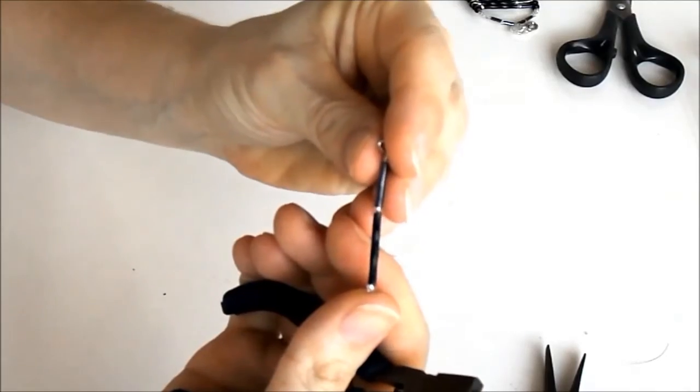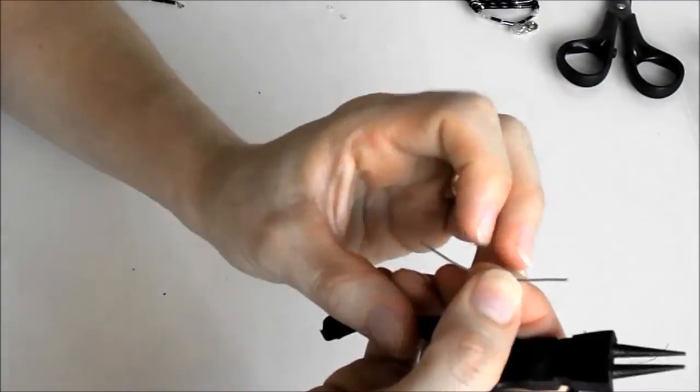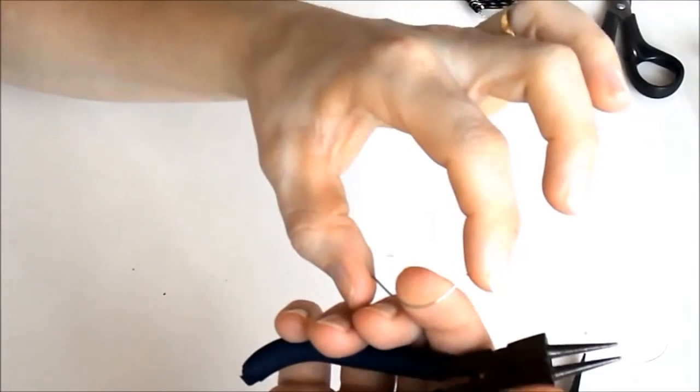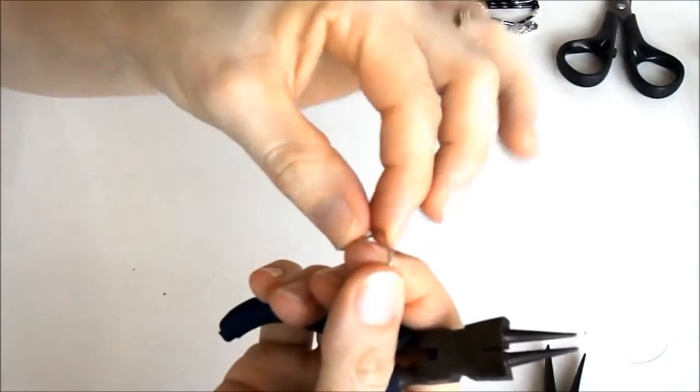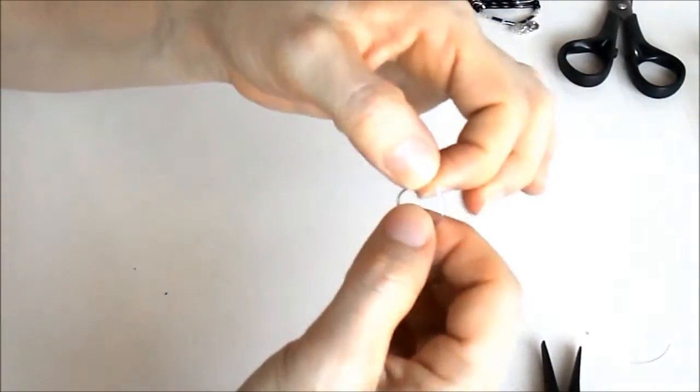Quatro para cada brinco. Depois eu pego um alfinete sem cabeça. Com o dedo mesmo eu moldo ele redondinho assim. E vou colocar aqui.